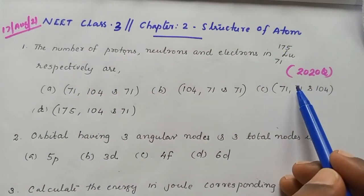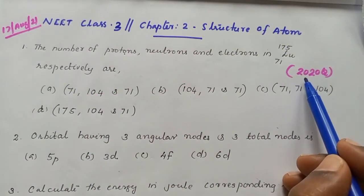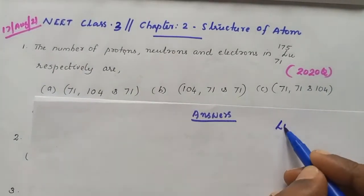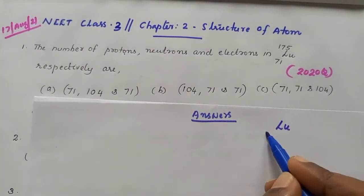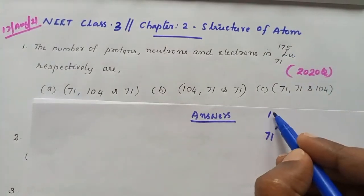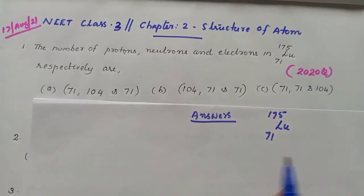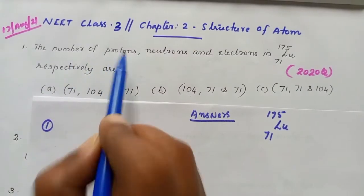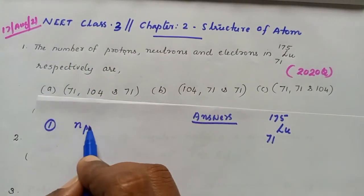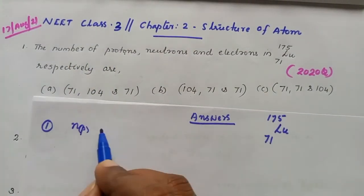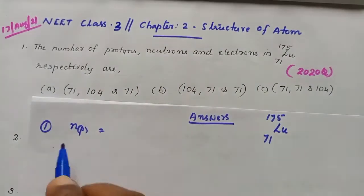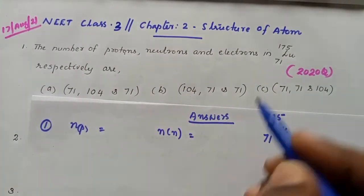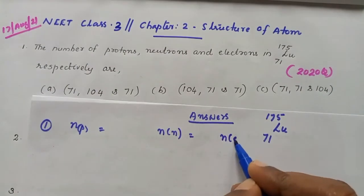This is a previous year question. Given that the lutetium atom has atomic number 71 and mass number 175. The question asks us to calculate the number of protons, number of neutrons, and number of electrons.